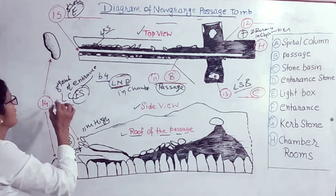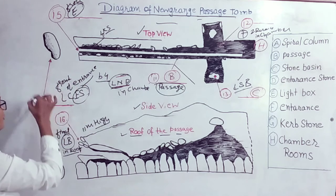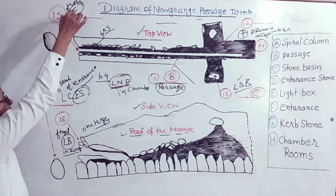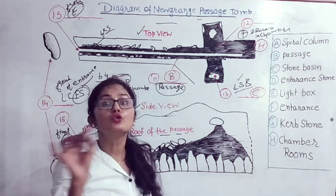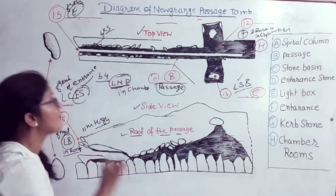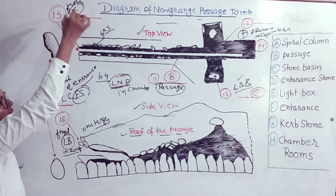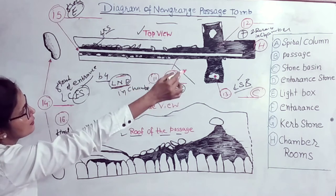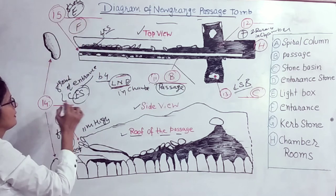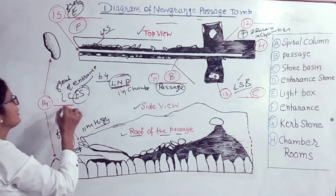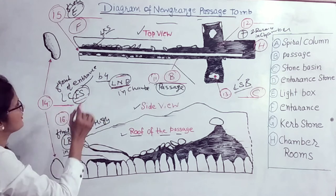For question 14, the speaker said 'in front of the entrance.' So this is the front side, and the entrance is F. In one sentence, the speaker actually gave two answers — the entrance is F, and in front of the entrance is the entrance stone, which is D.